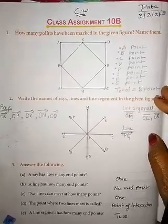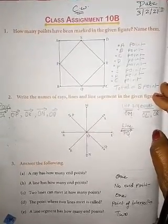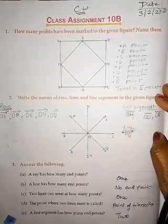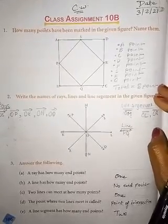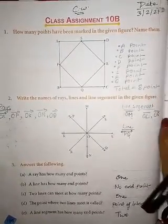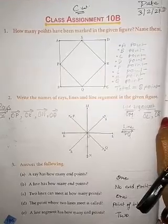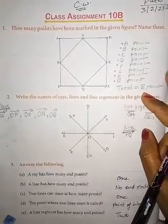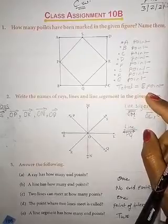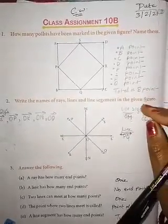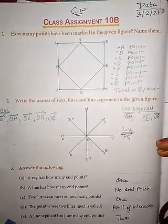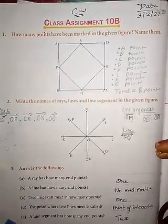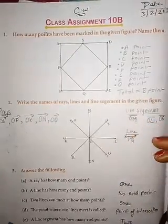Class assignment 10b — start your exercise. This exercise you are to fill in your book. Mention the proper date: 3 to 21. Now start your exercise, class assignment 10b, first question.